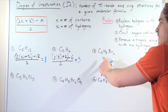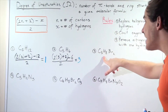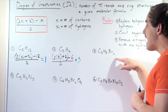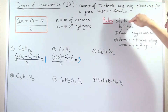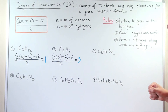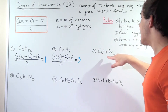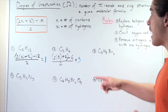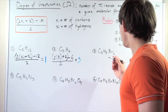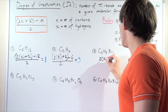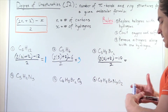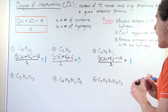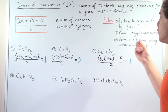In example three, we have 5 carbons (n = 5), 8 hydrogen atoms, and 2 bromines. Since bromine is a halogen, rule number one applies: replace halogens with hydrogens. So we add 2 more hydrogens, giving us 8 + 2 = 10 hydrogen atoms total, so x = 10. Applying the formula: (2×5 + 2 - 10) / 2 = (12 - 10) / 2 = 2 / 2 = 1. This compound either has 1 pi bond or 1 ring structure.